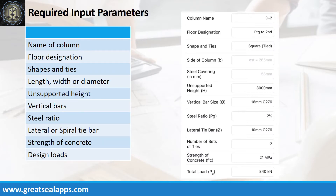Input parameters required: column name C2, floor designation footing to second, shape and ties — square, tied, unsupported height 3000mm, vertical bars 16mm at grade 276, steel ratio 2%, lateral tie bars 10mm at grade 276, strength of concrete 21MPa, and factored actual load 840kN.